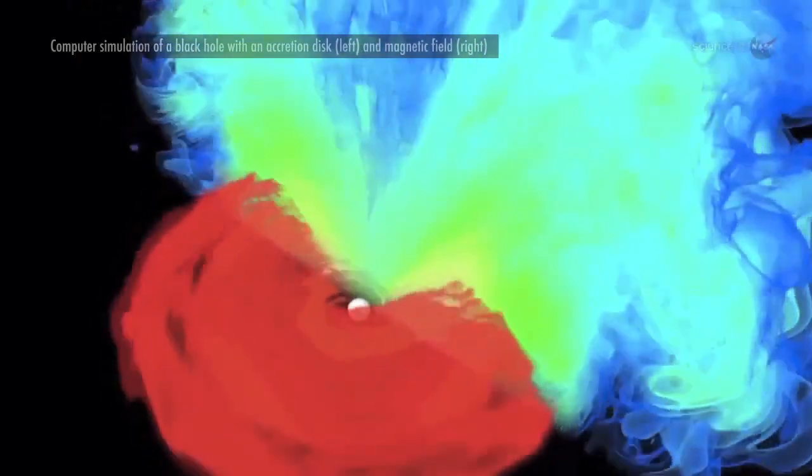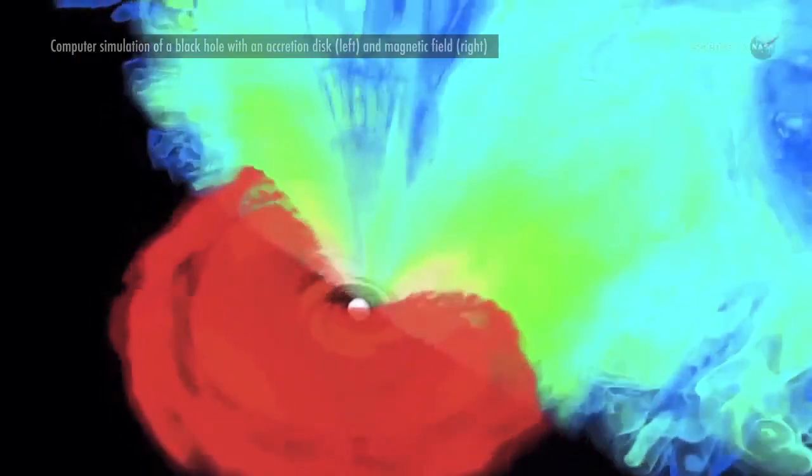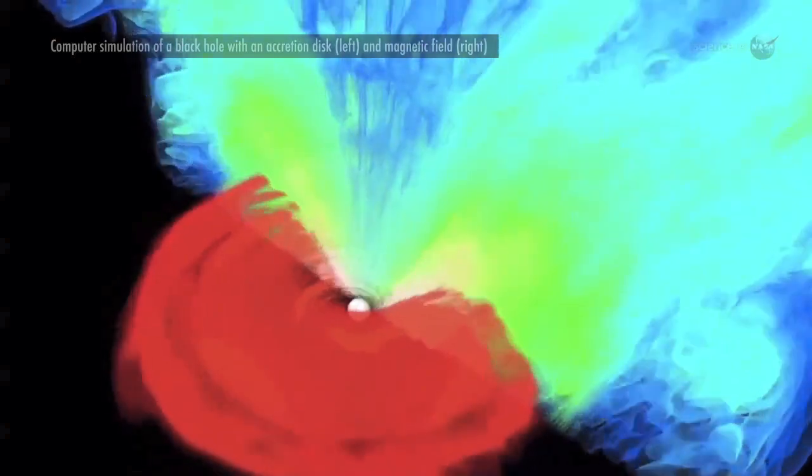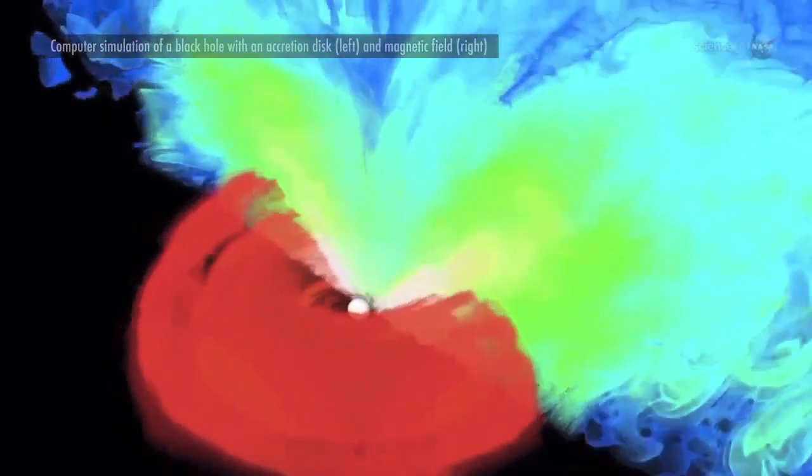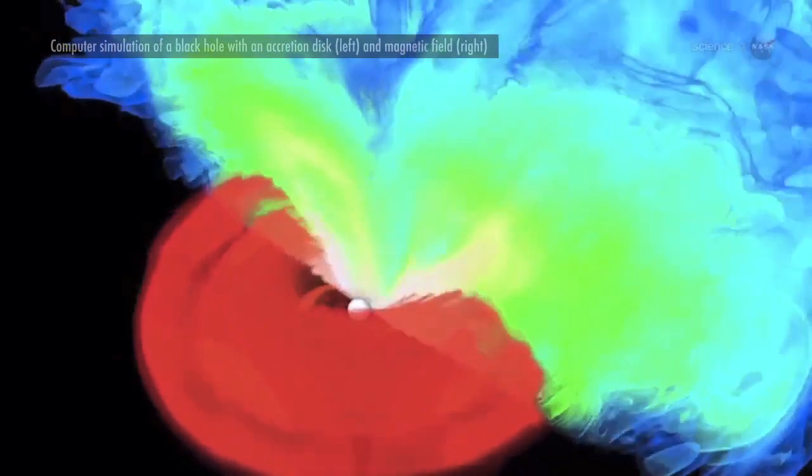So the pattern of how titanium-44 is spread throughout a supernova remnant can reveal a lot about what happened at that crucial threshold during the explosion. And with that information, scientists might be able to figure out what's wrong with their computer simulations.